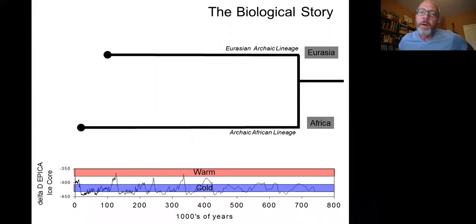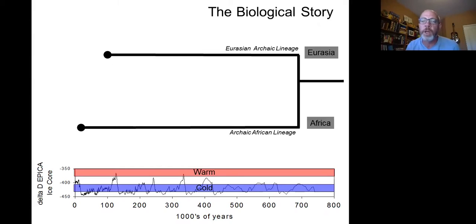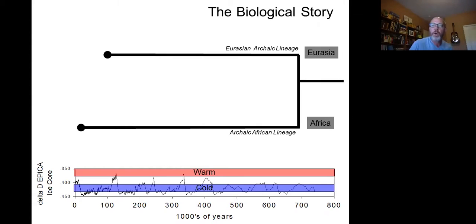I've simplified the human origin story a little bit but it's not wrong. I've broken the lineages of humans present in the last 800,000 years into two basic groups: the Eurasian archaic lineage and the African archaic lineage. When those lines end in circles, that means extinction. From both the fossil record and the genetic record, both major lineages share a last common ancestor somewhere around 800,000 years ago — likely Homo erectus.